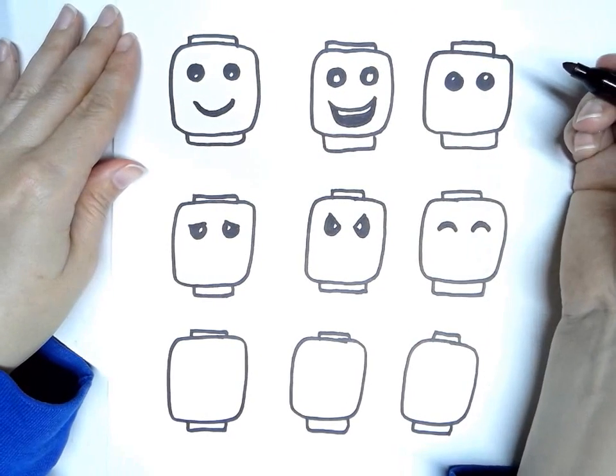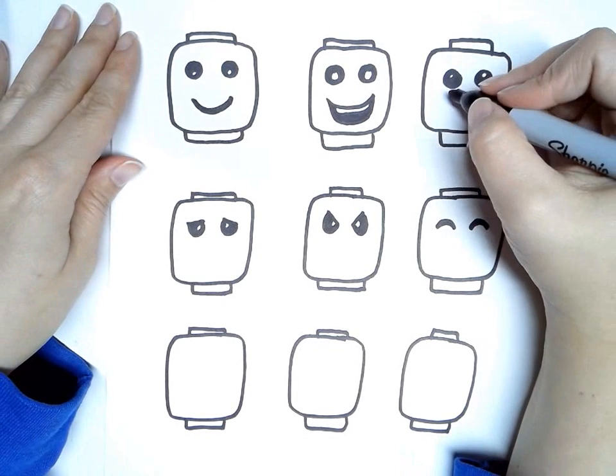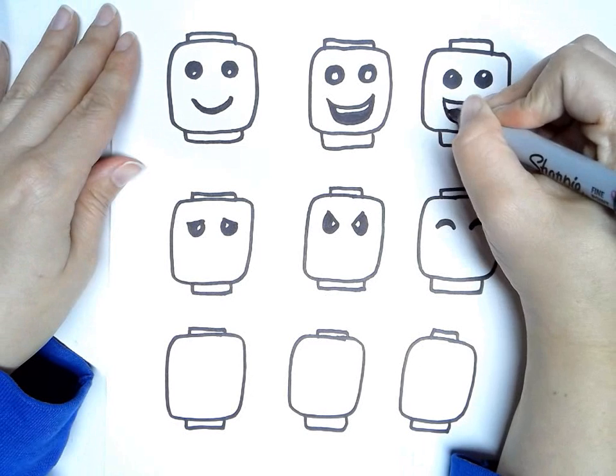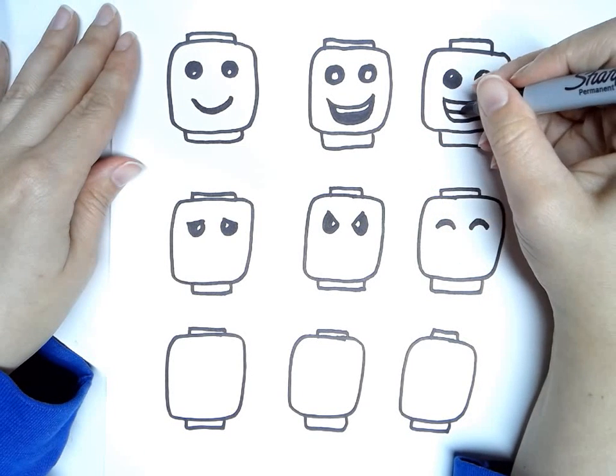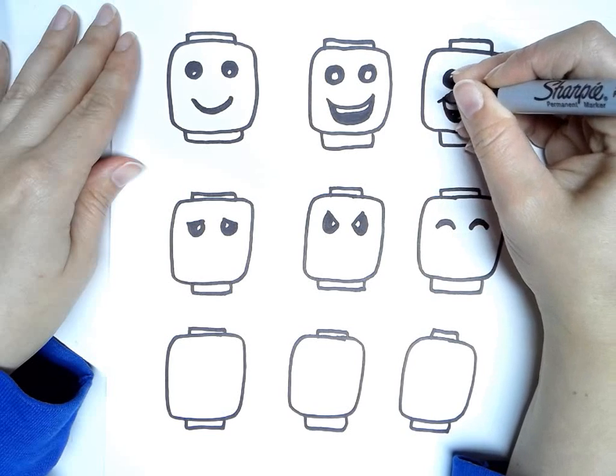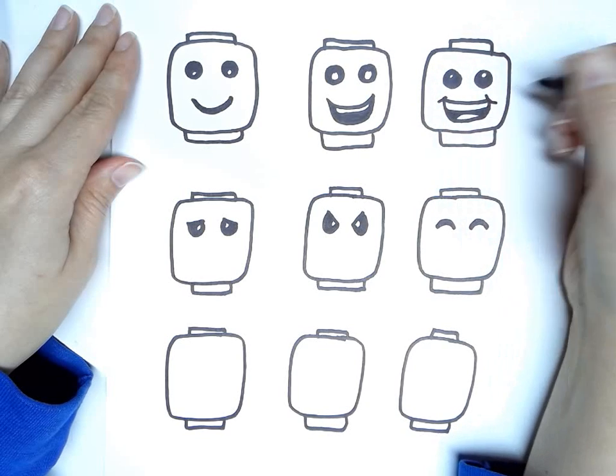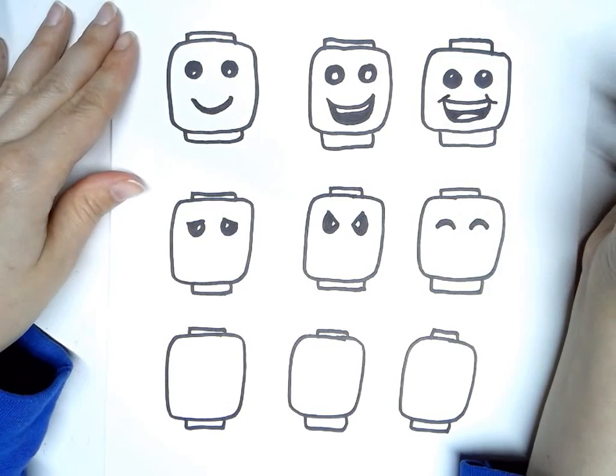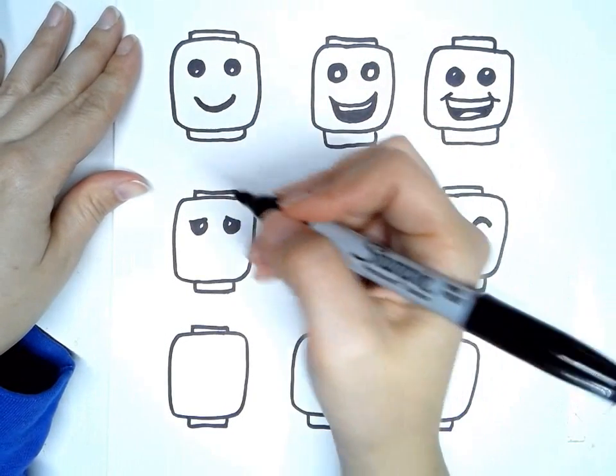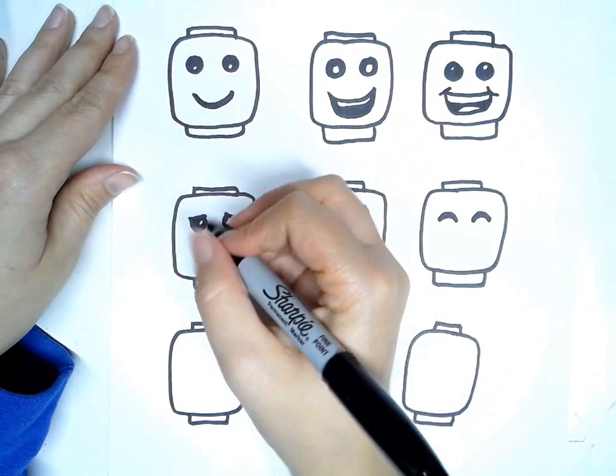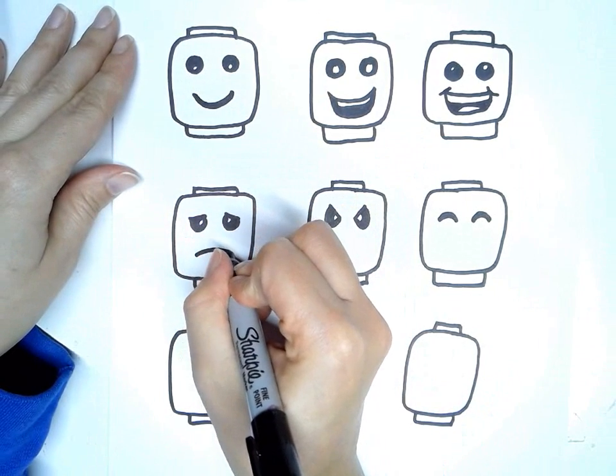Or you could have a smiley face with its teeth showing and a tongue. Then I'd color that tongue red and I'd leave the teeth white. You can have kind of a sideways, or maybe for the worried look. Maybe I'd have kind of a sad face like that.